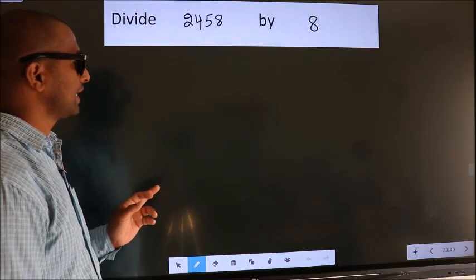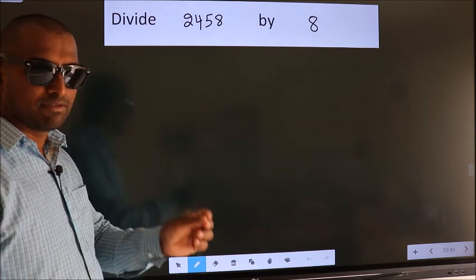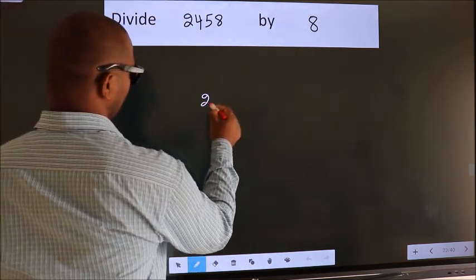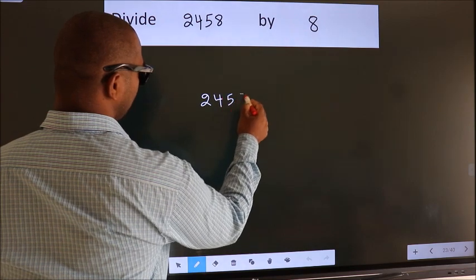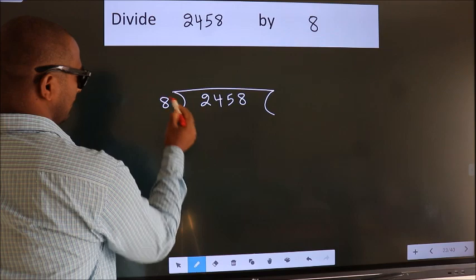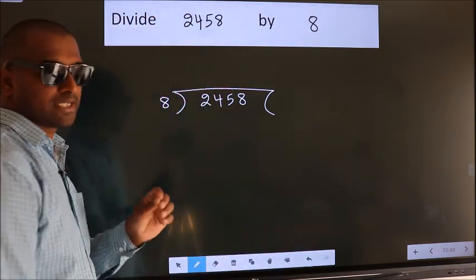Divide 2458 by 8. To do this division, we should frame it in this way. 2458 here, 8 here. This is your step 1.